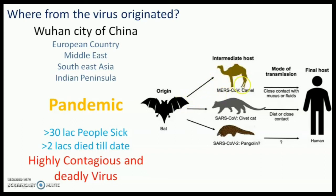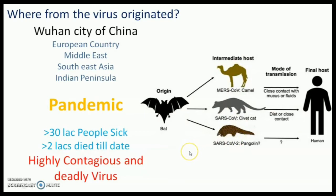So basically human beings acquired this virus from bats via a secondary host, which may be any animal. Within this intermediate or secondary host, the virus recombines to develop or evolve into a new species, which might be very dangerous, like this current one.